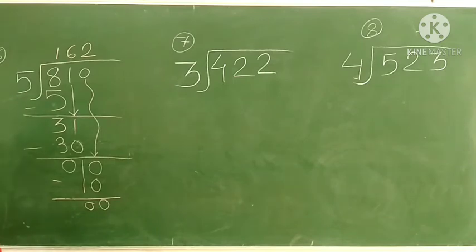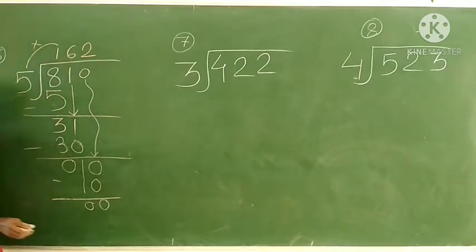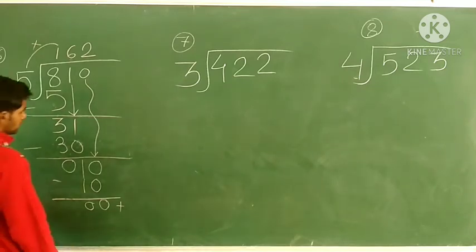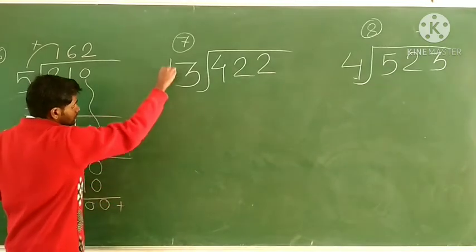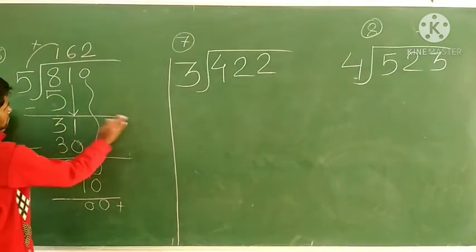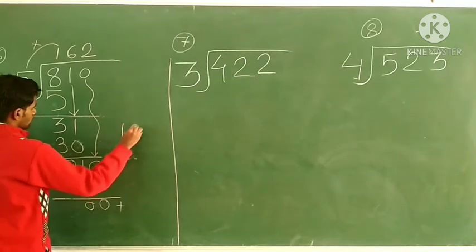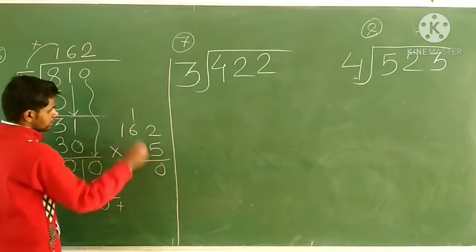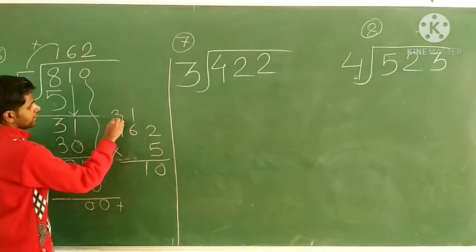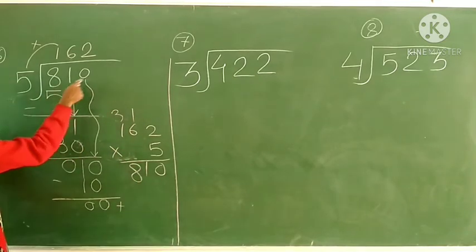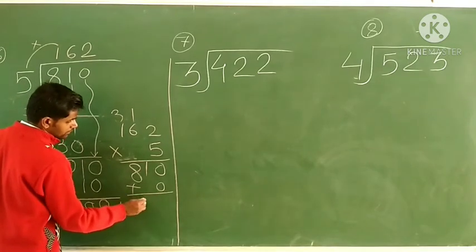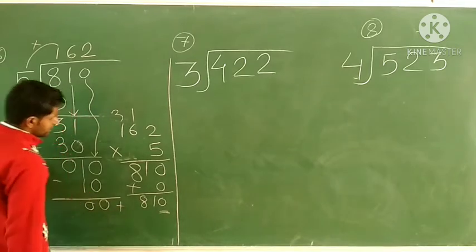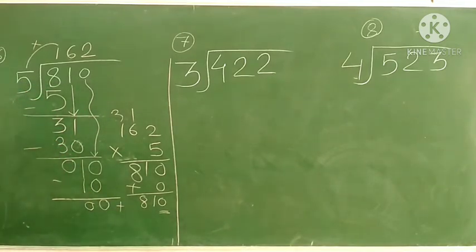Now check the answer. Multiply the quotient 162 by divisor 5. 5 twos are 10, carry 1; 6 times 5 is 30 plus 1 is 31; 1 times 5 is 5, carry 3 gives 8. Result is 810. Then add remainder 0: 810 + 0 = 810. This 810 is the dividend, so the answer is correct.